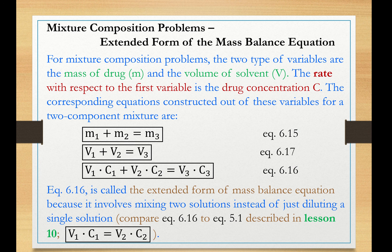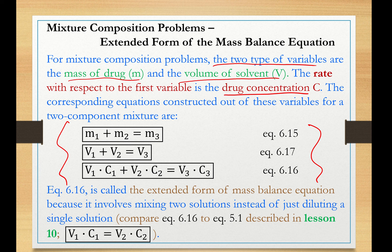Now, the two types of variables that are preserved in mixture composition problems are the mass of drug and the volume of solvent, and the rate associated with these two variables is the drug concentration. As explained in lesson 12, we can derive three equations.